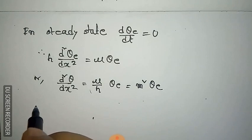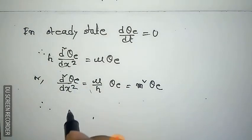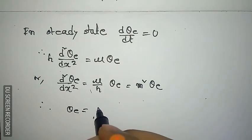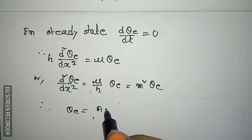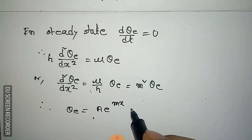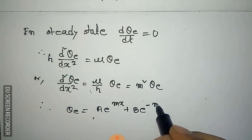With mu / h = m², the ODE becomes d² theta_e / dx² = m² theta_e. The general solution is theta_e = A e^(mx) + B e^(-mx), which gives us the steady-state temperature distribution along the rod.